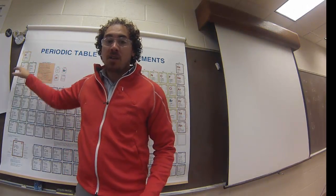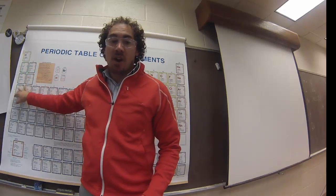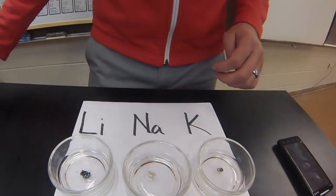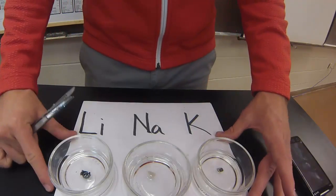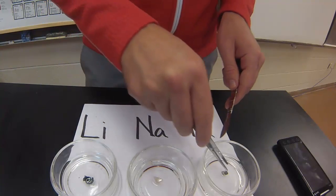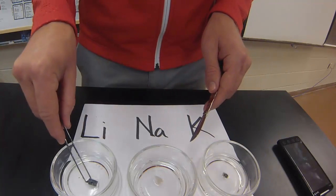Let's take a look at the first three alkali metals: lithium, sodium, and potassium. Here I have some samples of each one of these metals. Let's take a look at their physical properties. We can see that they're all solid at room temperature, and I have a small sample of each one here.